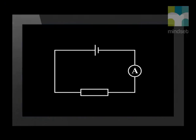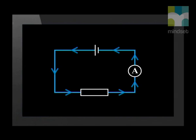We will start with a basic circuit. This circuit consists of a single cell, an ammeter, and a resistor connected in series. The cell provides the energy for the circuit. Chemical energy from the cell is converted to electrical energy in the circuit.